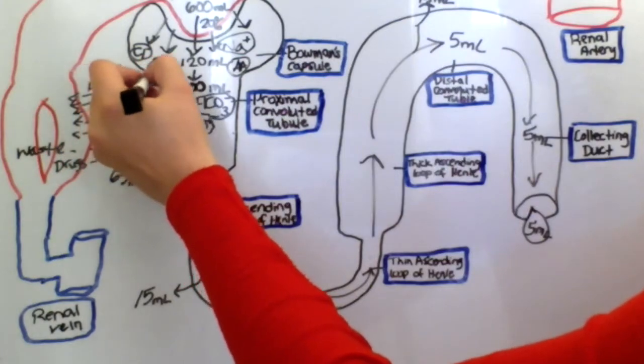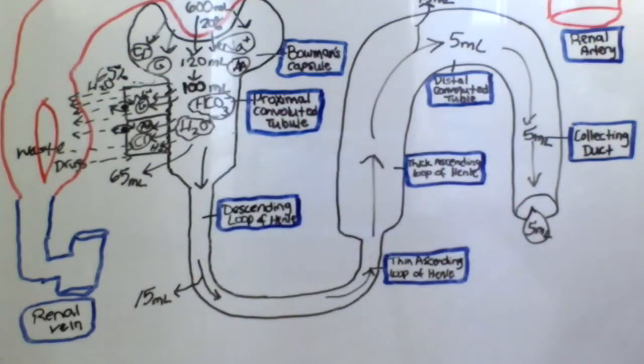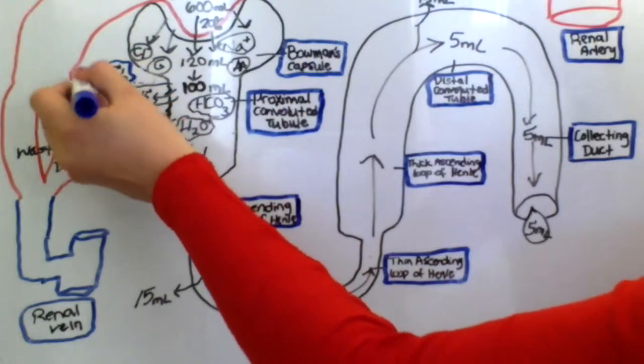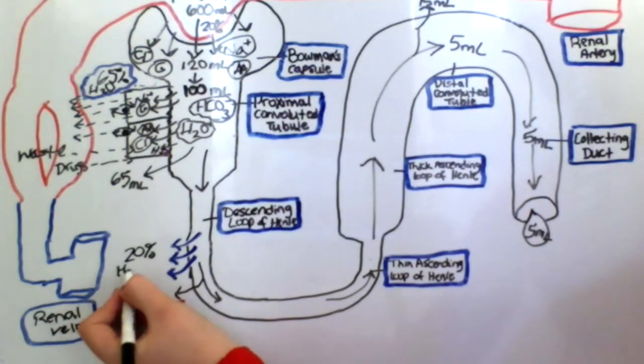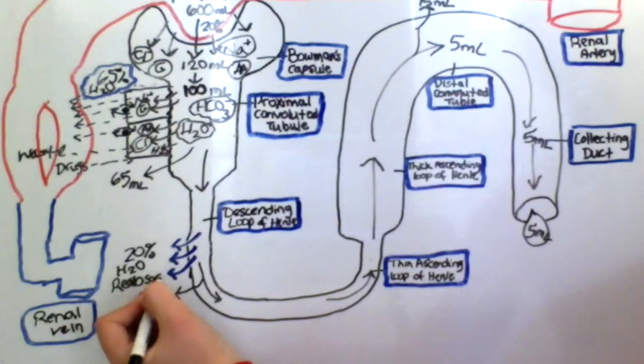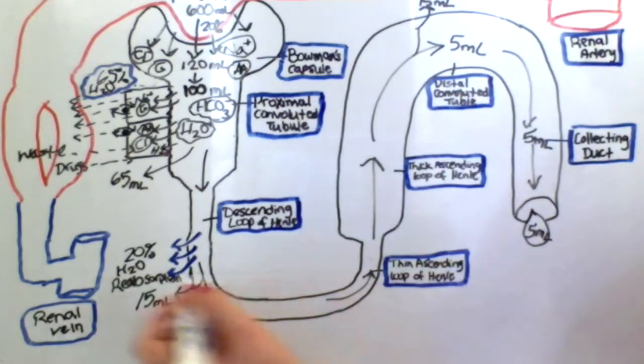Sixty-five percent of water is reabsorbed at the proximal convoluted tubule. Another twenty percent of water is reabsorbed at the descending loop of Henle.